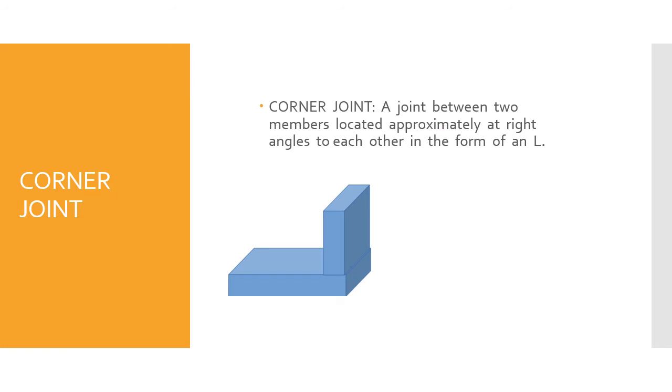Now this is a corner joint. A corner joint between two members located approximately at right angles to each other in the form of an L. This is a corner joint.